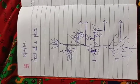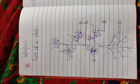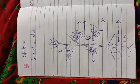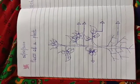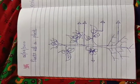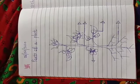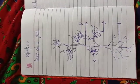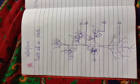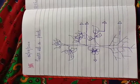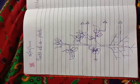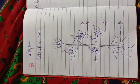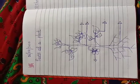Hi students, welcome to online class. In our previous class, we learned the different classifications based on the stems of plants — those are trees, shrubs, herbs, climbers, and creepers. All of these we learned in our previous class.